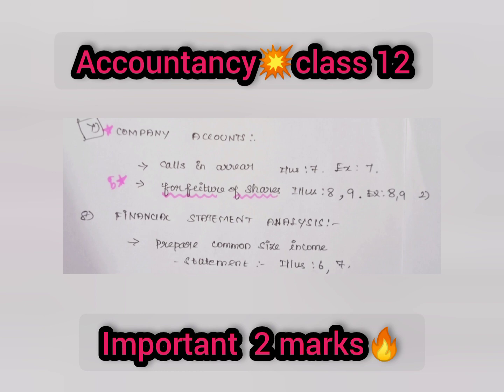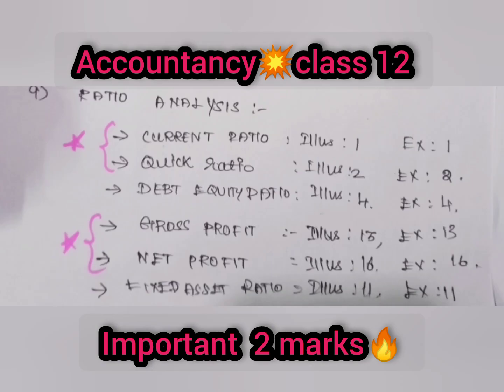The ratio analysis is very important. The current ratio is 2. The gross profit and net profit is 2. So, we have 6 ratios in total.